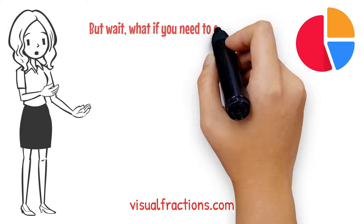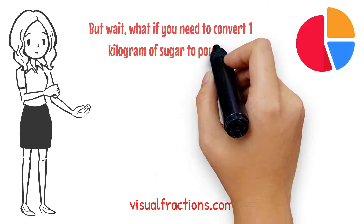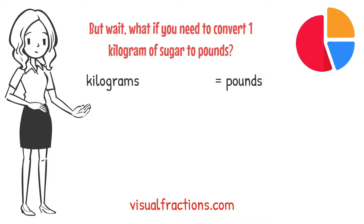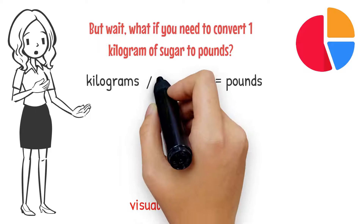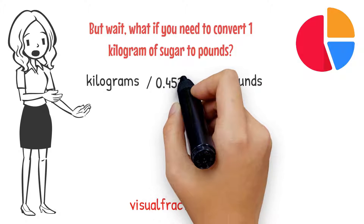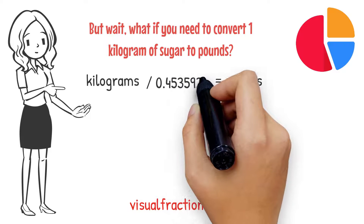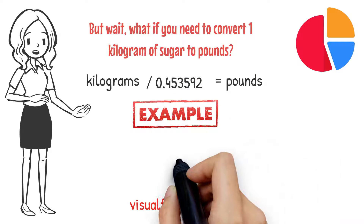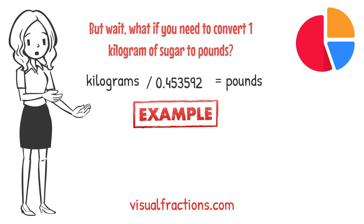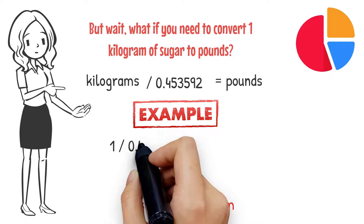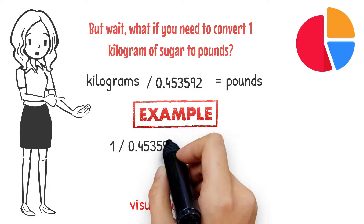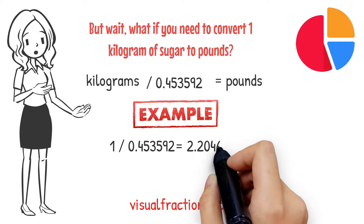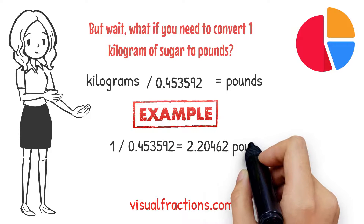But what if you need to convert 1 kilogram of sugar to pounds? To convert kilograms to pounds, you need to divide the number of kilograms by the conversion factor of 0.453592. Let's walk through an example: we start by dividing 1 by 0.453592. This gives us approximately 2.20462 pounds.